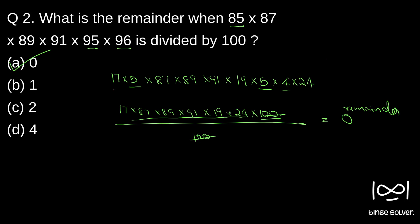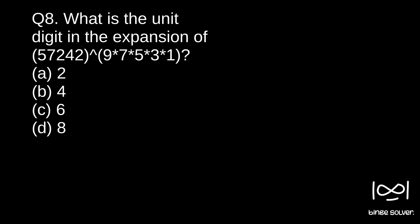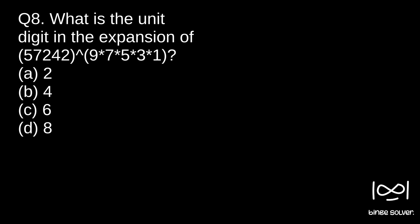Question 3: What is the unit digit in the expansion of 57242 raised to the power of 9 into 7 into 5 into 3 into 1? So here we have a large number raised to another large number. It only asks for the unit digit, so the unit digit of this base number is 2.